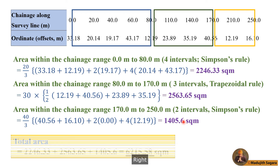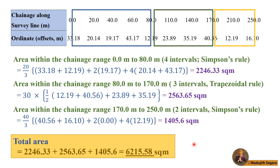Then we get the sum of these three answers. The area within the chainage of 0 to 80 is 2246.33 square meters; from 80 to 170 that is 2563.65 square meters; and from 170 to 250 that is 1405.60 square meters. The total area is the sum of these three, which is 6215.58 square meters.